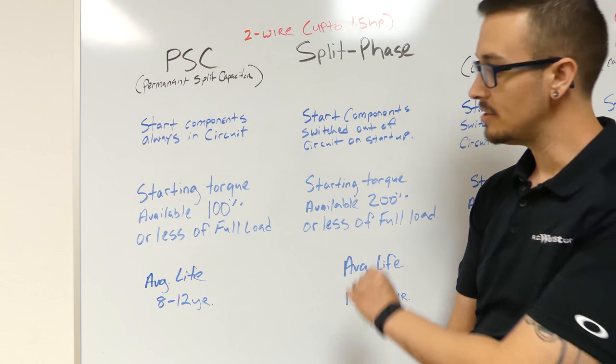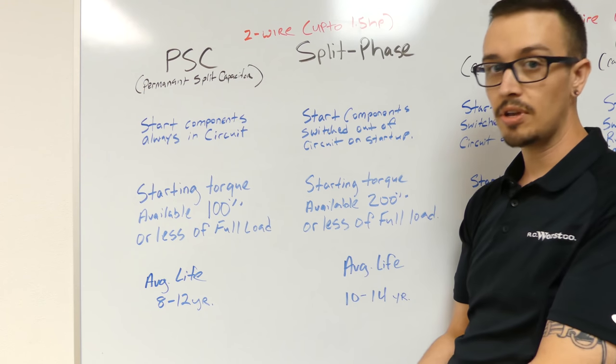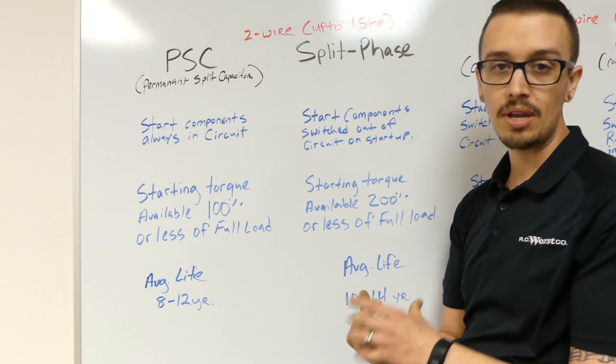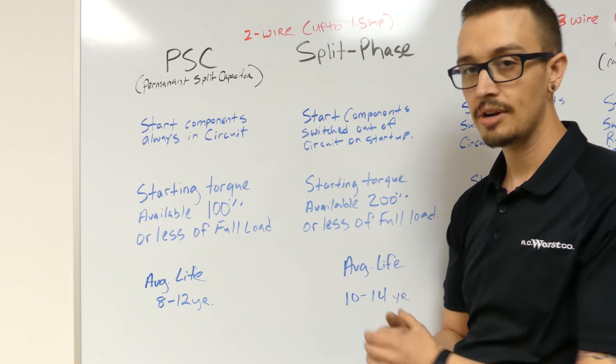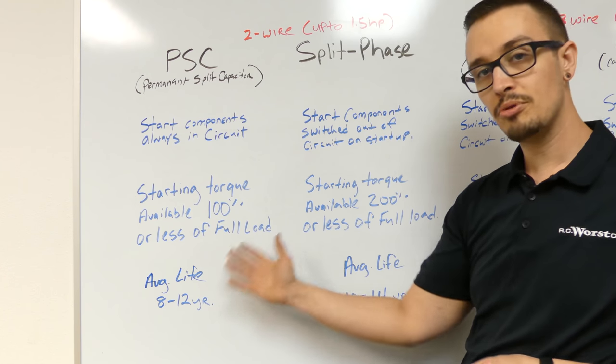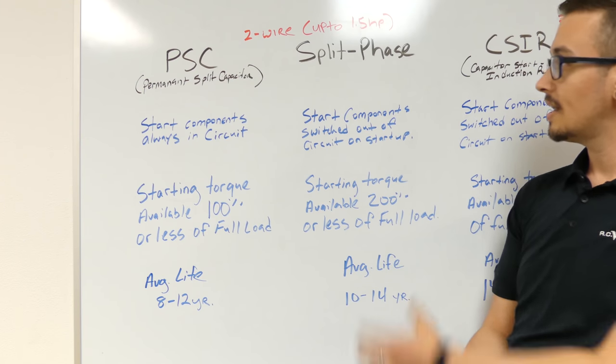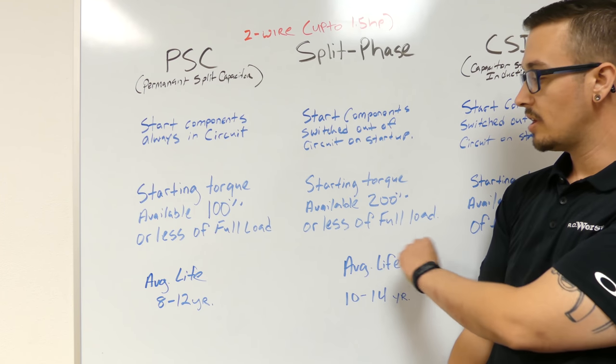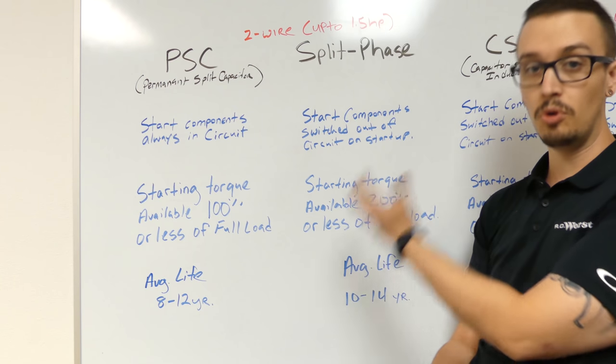And that actually brings us right into the starting torque available on these motors. Now these are just standard figures, not any specific manufacturer, because a lot of times this data is not published. So this is generic information. The starting torque available on a PSC motor is typically 100% or less of full load. And then when you're looking at a split phase motor, the starting torque available is generally 200% or less of full load.